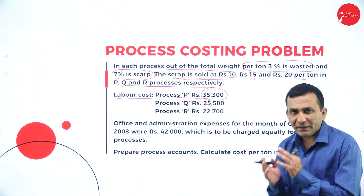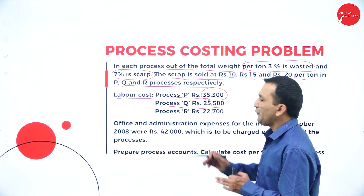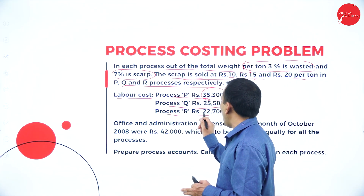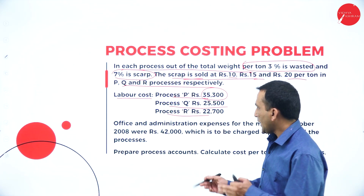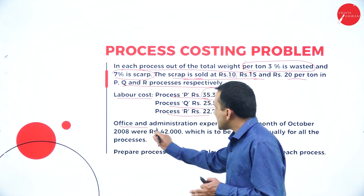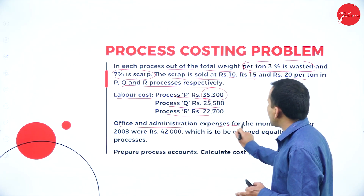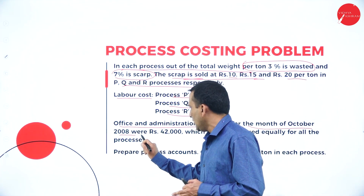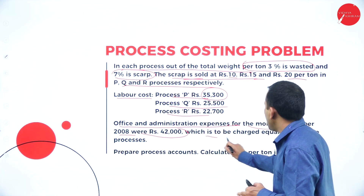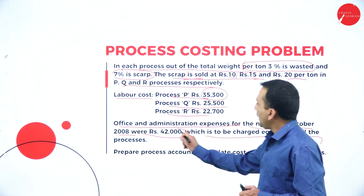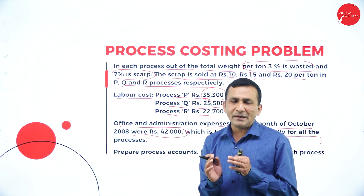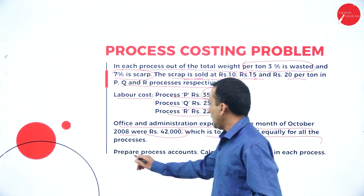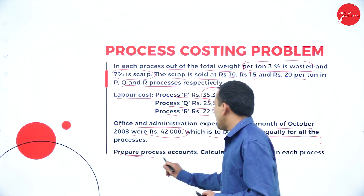Labour cost is also given: Process P ₹35,300 (debit side), Process Q ₹25,500, and Process R ₹22,700. Office and administration expenses for October 2008 are ₹42,000, to be charged equally — divided by 3 processes — giving exactly ₹14,000 each. We are asked to prepare the process account and calculate the cost per unit (cost per ton) in each process.